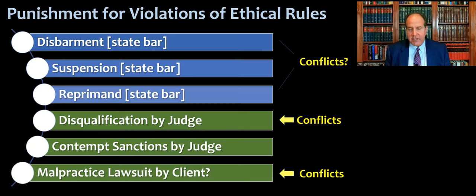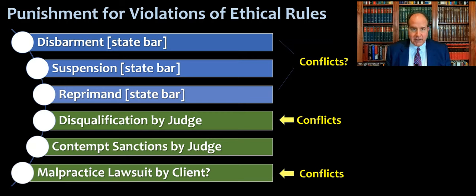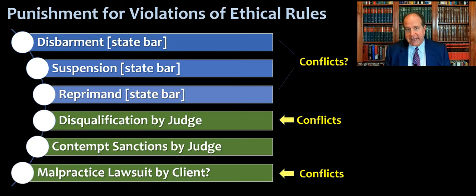Keep in mind that we have different types of sanctions. For purposes of conflicts of interest, disqualification and malpractice actions are the primary enforcement mechanisms. Occasionally, the state bar brings a disciplinary action against a lawyer for conflicts of interest, but to be honest, it's rare. By far the most common disciplinary action causes are failure to communicate with a client and lack of diligence or neglect of a client matter. More often, the conflicts of interest rules are enforced through disqualification in a legal proceeding or a malpractice action by a client after the fact.